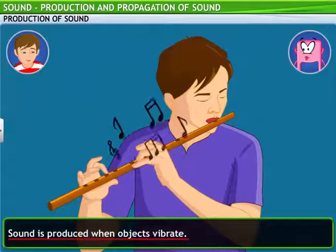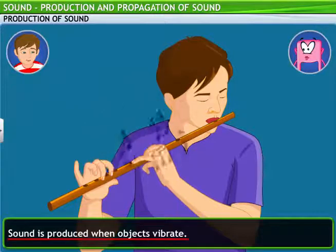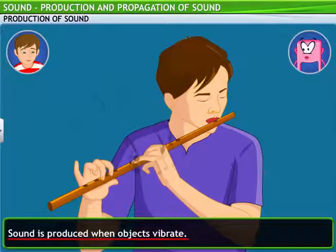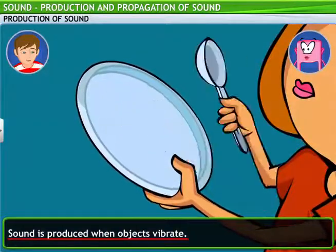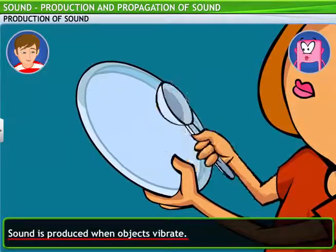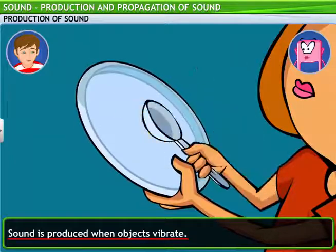So you see, even in a flute, sound is a result of vibrations. In fact, all objects produce sound when they are vibrated. Say, for example, when you strike a metal plate with a spoon, the resulting vibrations produce a sound that we can hear.